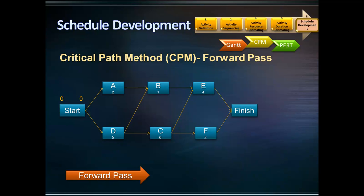Assuming zero days for the start milestone and zero days for the start of activities A and D: the earliest time activity A can be completed is two days, because activity A takes two days. Activity D can finish in five days. Activities A and D are predecessors of activity B, so activity B cannot start until both A and D are finished. The earliest time activities A and D can finish is five days, so the earliest time activity B can start is five days. Continuing the forward pass, the earliest time the project can be completed is 15 days.